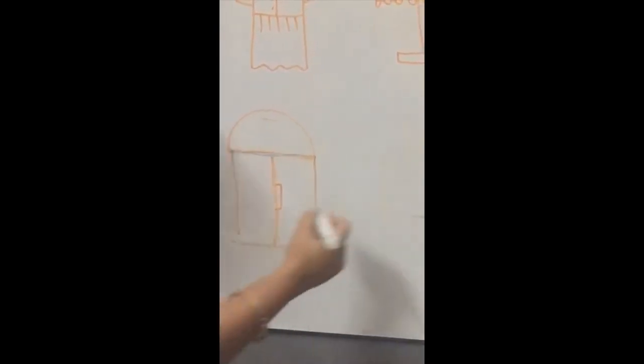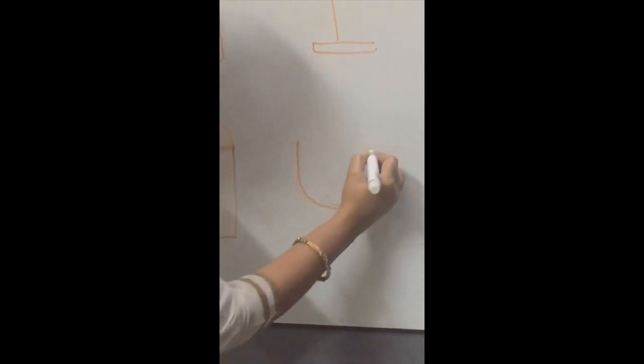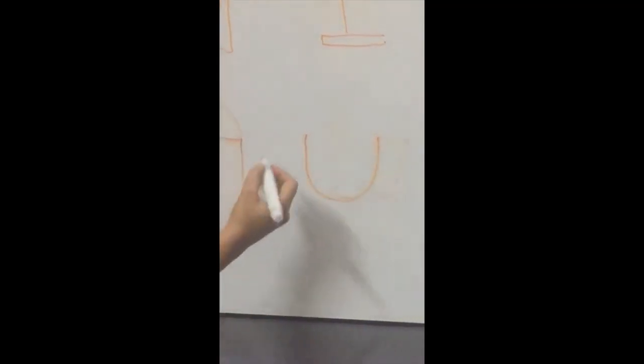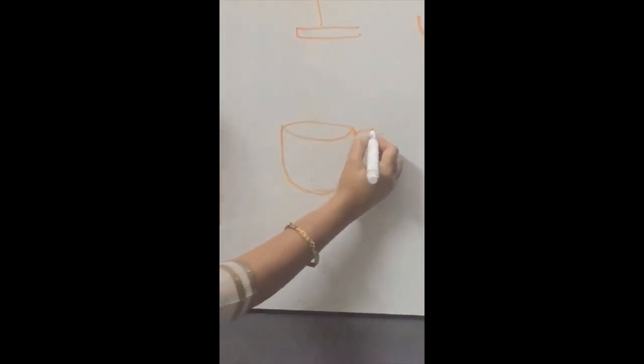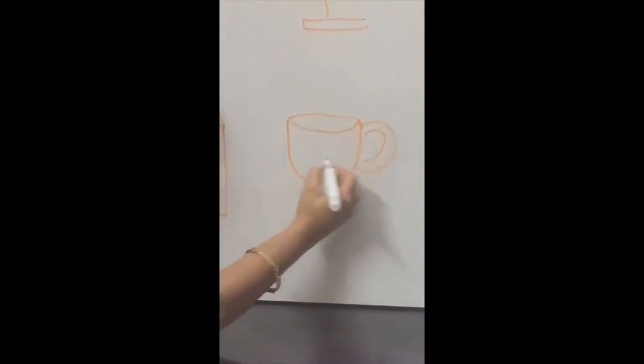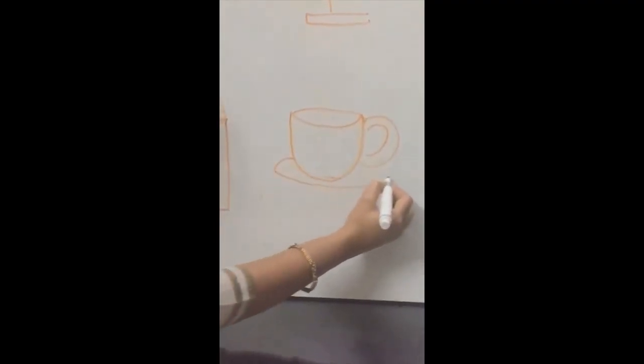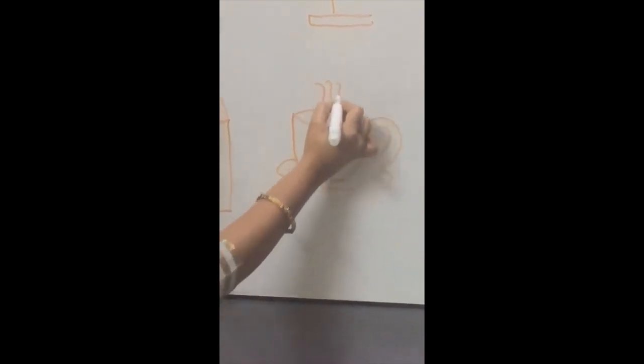And next, letter U. This is letter U. With letter U, here you have to draw the line here. Hot.